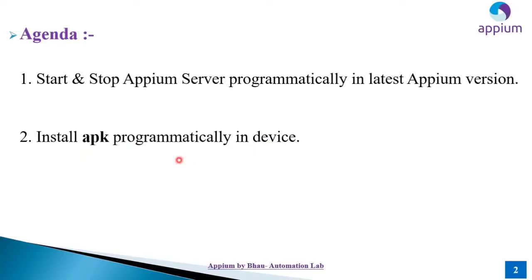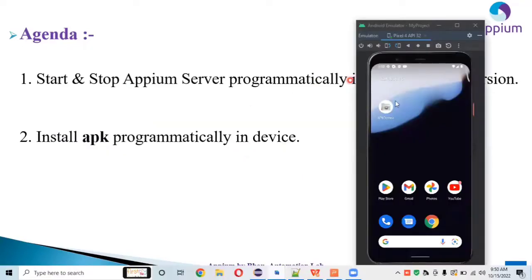This is also a very important and tricky concept while working with APM automation, so watch the video carefully till the end to understand the better way of how you can install the APK programmatically. There are two things while working with APM automation. First of all, we need to check whether the app you are automating with is already installed in your system or not.